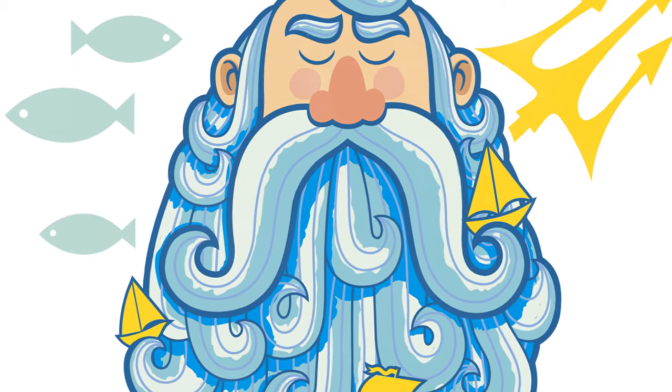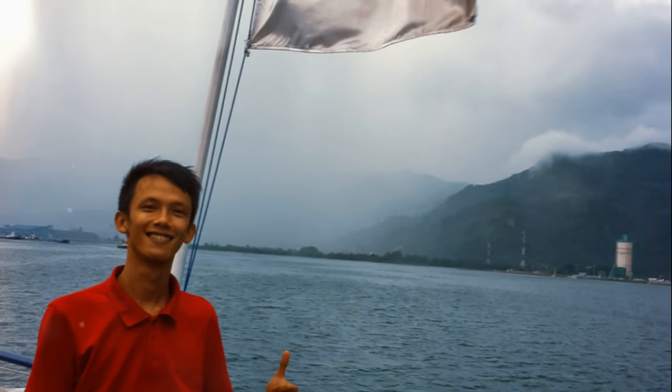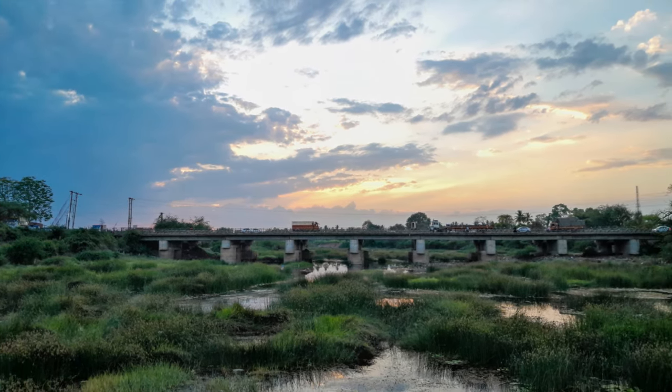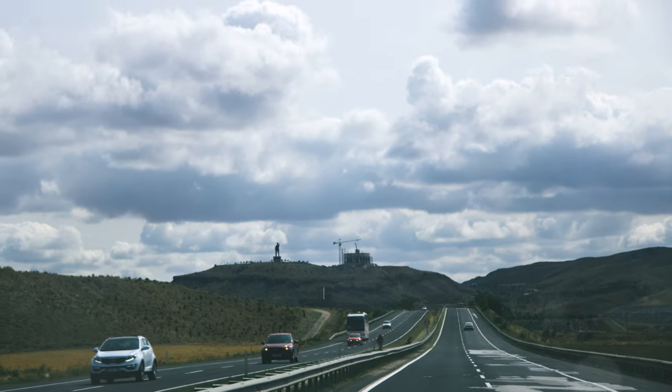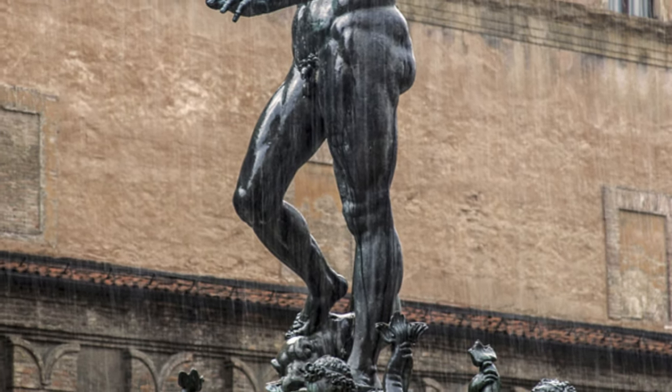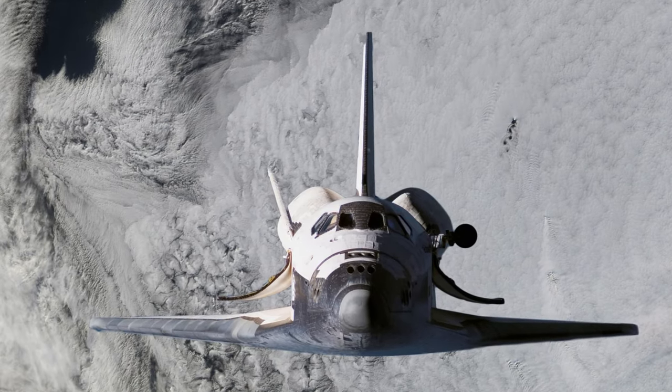And while these might seem like just numbers, they paint a picture of an environment that is incredibly dynamic and quite extreme. In the midst of this tempestuous weather, there exist massive storm systems, some almost the size of Earth, swirling in the deep blue atmosphere. In essence, Neptune's atmosphere is a place of extraordinary phenomena.